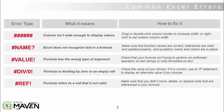The VALUE error means the formula has the wrong type of argument. Just make sure that your formula is not trying to perform an arithmetic operation on text strings, and make sure you don't have values that may be accidentally formatted as text. If you try to multiply 8 by the letter P, Excel is going to give you a VALUE error.